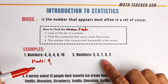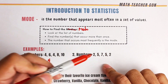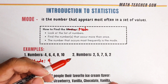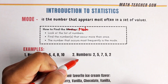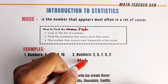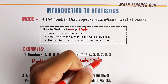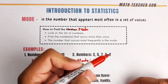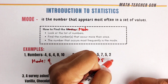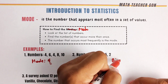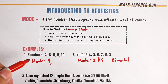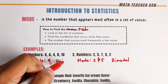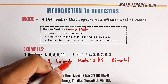Let's move on with item number 2. The numbers are 2, 5, 7, 5, 2. There are two numbers that appear twice, so the modes are 2 and 5 — we have two modes. In this case, we call this kind of mode bi-modal. Going back to item number 1, since it has one mode, that one is uni-modal.